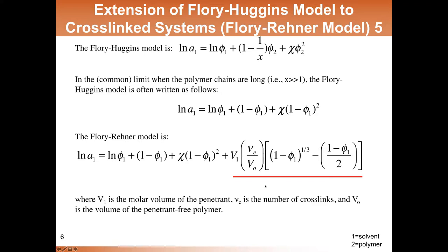There are a couple of new variables in the cross-linking term. One is ν_e, which is the number of cross-links in the polymer sample. V₀ is the volume of the penetrant-free (dry) polymer, so ν_e/V₀ is the number of cross-links per cc of dry polymer. V₁ is the molar volume of the penetrant. The Flory-Rehner model for cross-linked systems thus looks remarkably like the Flory-Huggins model but with this extra term accounting for cross-linking.